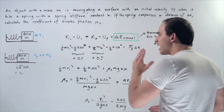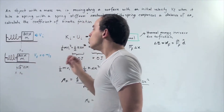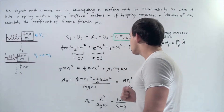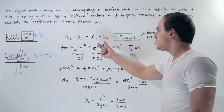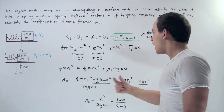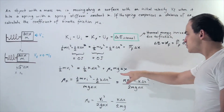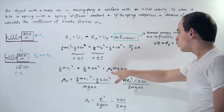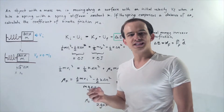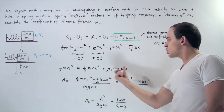In the final system, even though there is elastic potential energy stored in the spring, the box no longer has velocity — the velocity is zero — so the final kinetic energy is also zero. Both of these terms go to zero, and we get a simplified result. The force of friction can be rewritten as the normal force times mu_k, where the normal force equals m times g, times the coefficient of kinetic friction, as shown here.